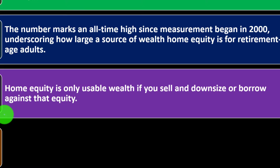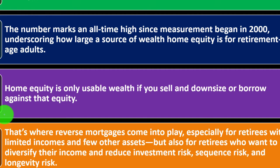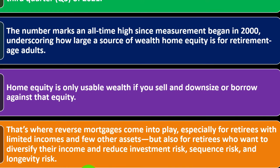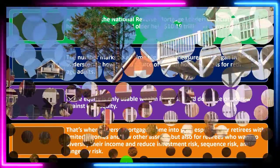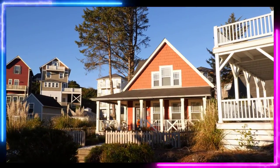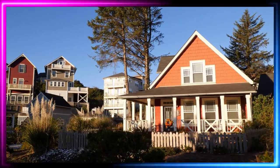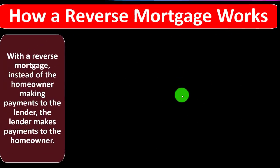How can you tap into that equity? You could take another loan against it, or sell the home — but then you'd have to move somewhere cheaper or downsize. That's where reverse mortgages come into play, especially for retirees with limited income and few other assets, but also for retirees who want to diversify their income and reduce investment risk, sequence risk, and longevity risk. If all your money is tied up in the home, it's not a diverse form of investment.